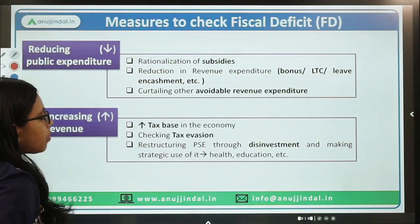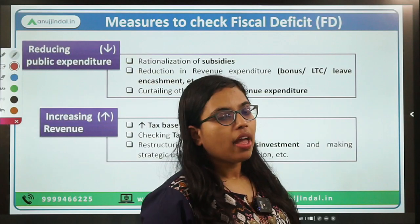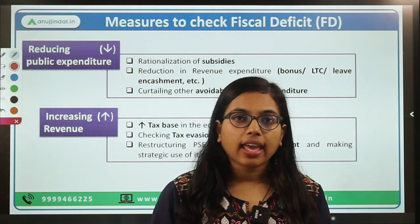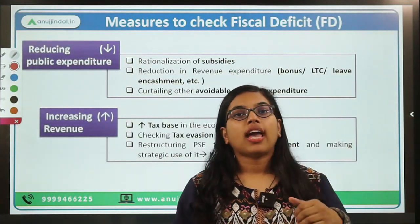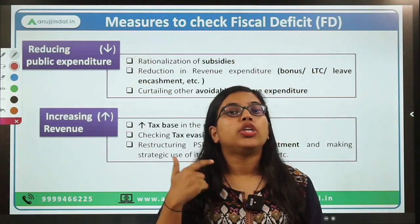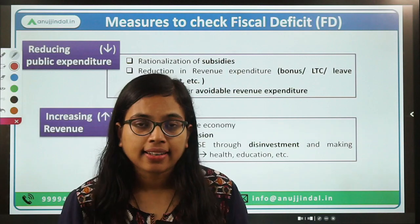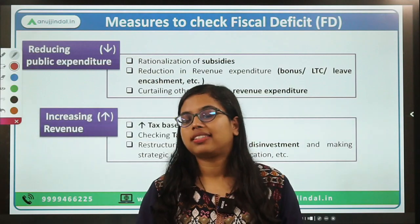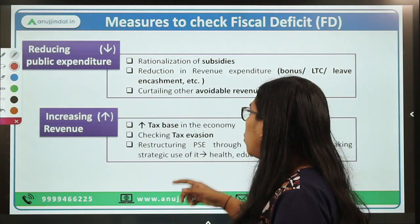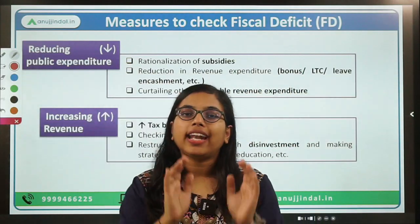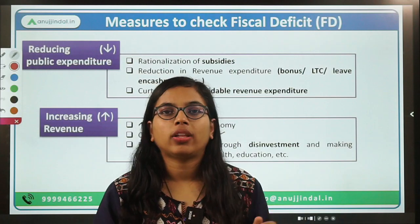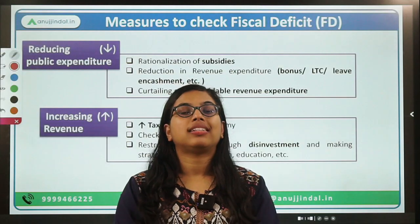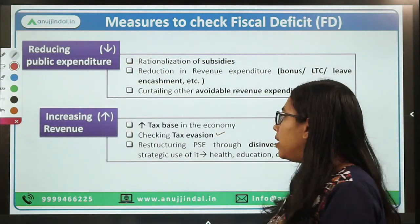Now let's talk about the measures. How can you reduce your fiscal deficit? There are two ways: either increase your revenue or decrease your expenditure. How can you increase your revenue? You can increase your revenue by broadening the tax base. It is pointless to just increase taxes — if you keep increasing taxes, there are chances people will start evading them. So the right approach should be increasing the tax base so that more people are encouraged to pay taxes to the government, because it is the ultimate source of revenue.